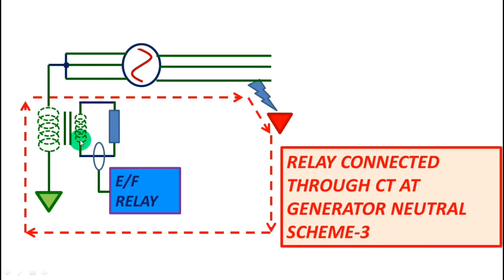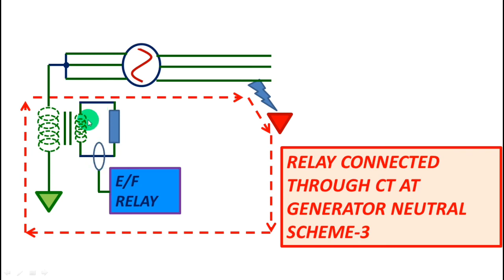Now we will see how earth fault protection is employed for a generator with a generator transformer. Here you can see it is connected to the line of the generator transformer to detect the earth fault current. The primary fault current flows here, and for this primary fault current there will be a secondary current flowing through the circuit, and the CT will detect the earth fault from here.